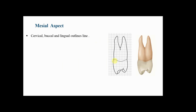Moving to the cervical, buccal, and lingual outlines of the maxillary first premolar from the mesial aspect: the cervical lines show less curvature than found in the anterior teeth, which is a characteristic feature for all posterior teeth. The curvature may be only one millimeter. The buccal outline is usually convex below the cervical line, then becomes straight toward the tip of the buccal cusp, while the lingual outline is smoothly convex from the cervical line to the tip of the lingual cusp.